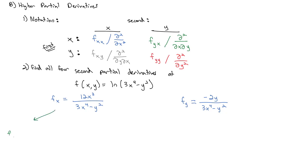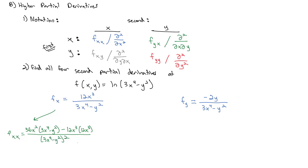Let's take the partial of fₓ with respect to x — that is, fₓₓ. We'll use the quotient rule here. The derivative of the numerator is 36x² times the denominator (3x⁴ − y²), minus the derivative of the denominator with respect to x, which is 12x³, times the numerator (12x³), all over the denominator (3x⁴ − y²) squared. We could simplify that, but let's keep going and find another partial derivative.